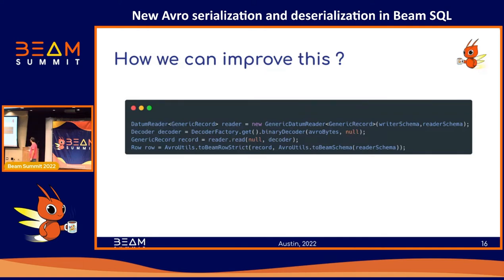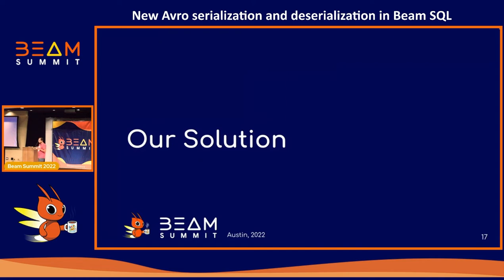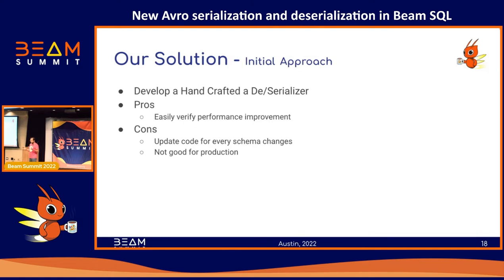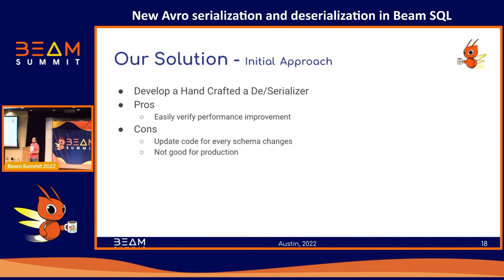We were doing everything twice. Our initial approach was: why not try our own deserializer rather than using the open source one? In that model we had to use our Avro library to turn to GenericRecord and then convert to Row. Maybe we can read directly from binary and create Rows, because our Avro schema is a superset of the Row — Avro can have multiple types for a given column but Row can only have one type, plus nullability.